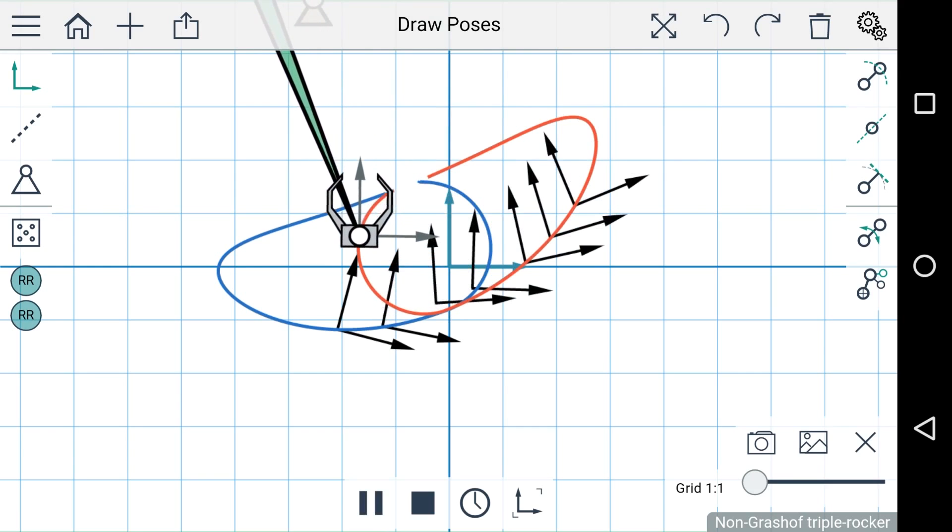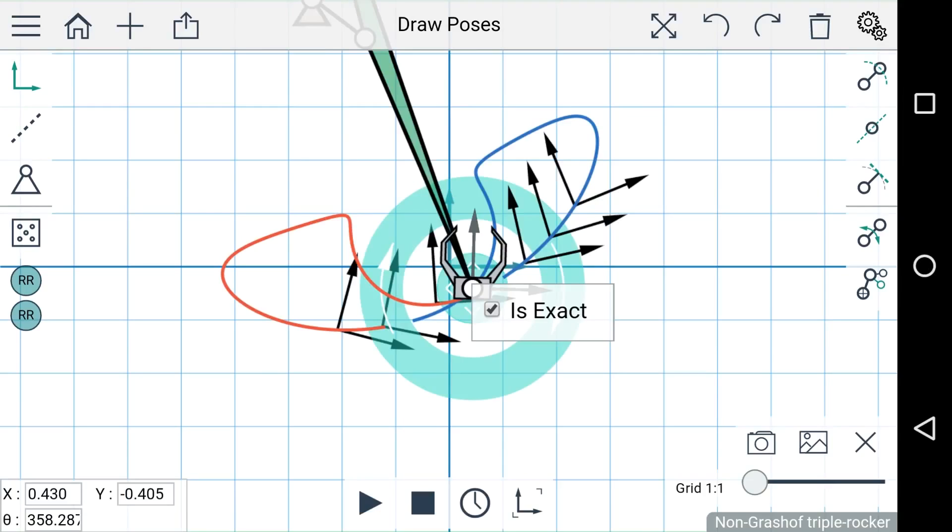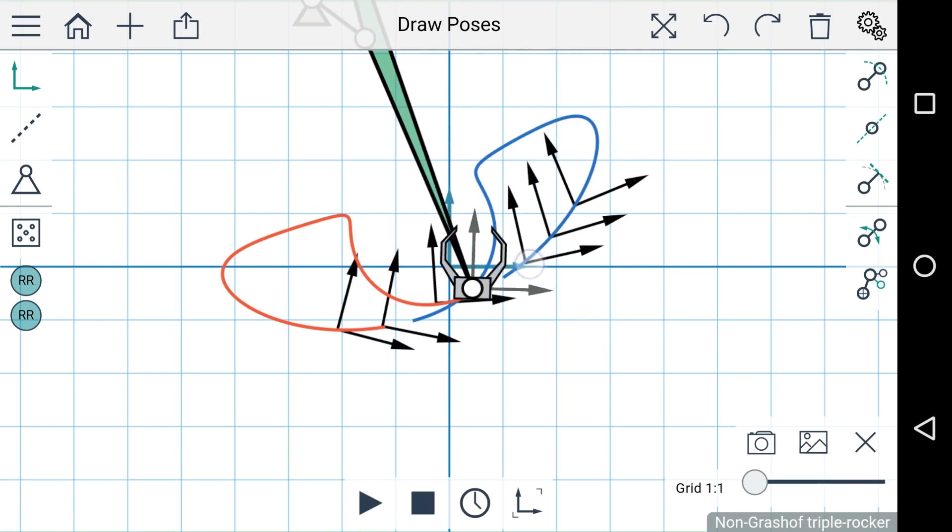If you'd like to select poses that the coupler should pass through exactly, you can double-tap a pose and check this box that says 'is exact.' So now the coupler will pass through this pose exactly and approximate the rest. You can select up to five exact poses.